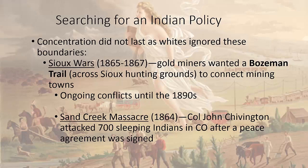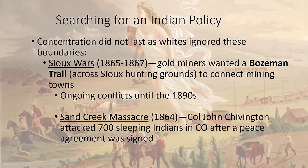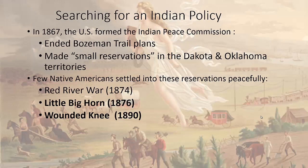The Sioux, who have a treaty saying they are entitled to this land, want to fight the white settlers. There are ongoing conflicts well into the 1880s and even 1890s. The biggest of which is the Sand Creek Massacre in Colorado, where Colonel John Chivington attacked 700 sleeping Indians — women, children, as well as men — a few days after a peace agreement had already been signed. It's a massacre because almost all of them die. Chivington is investigated and condemned by Congress, and he was known for saying, 'Kill and scalp all, big and little.'